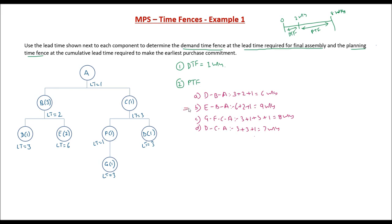Here the longest path is EBA, which has a total duration of 9 weeks. The planning time fence should be set to 9 weeks.